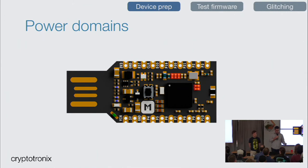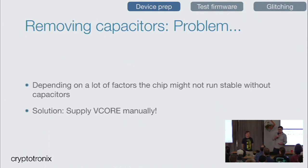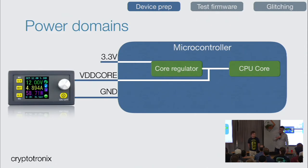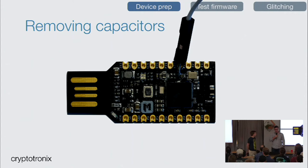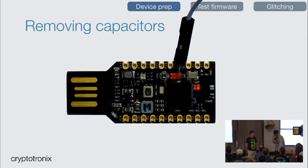On this NRF example board, the first prep step is to remove these capacitors — we identify them by looking at the datasheet and doing some reconnaissance, then just pluck them off. There's a reason those capacitors are there, so removing them can make things a little unstable — you have to provide a nice clean power supply instead. You're basically replacing a 10-cent capacitor with a dollar power supply, but that's fine. We solder one wire into VDD core and that's what it looks like in practice.